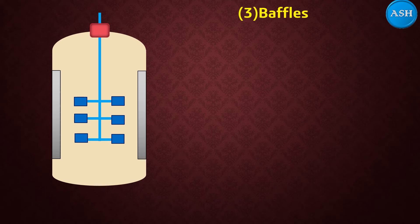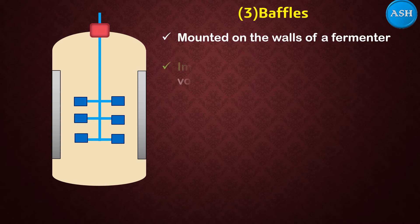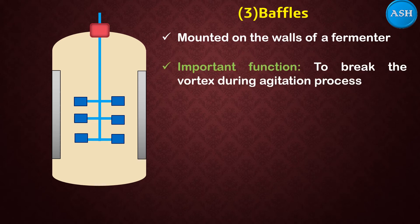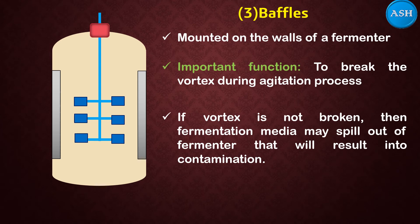The third part is the baffles, which are mounted on the wall of the fermenter. Their important function is to break the vortex during the agitation process, meaning they avoid sticking of contents inside the fermenter. If the vortex is not broken, the fermentation media may spill out of the fermenter, which might result in contamination.